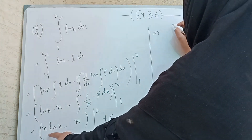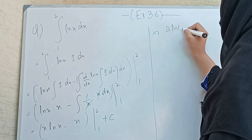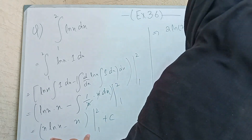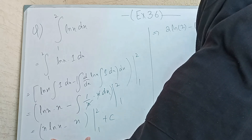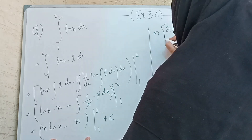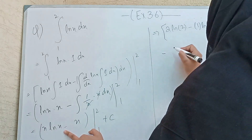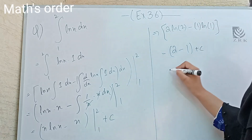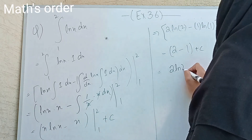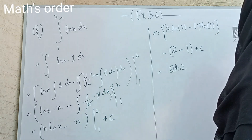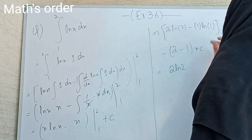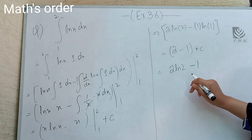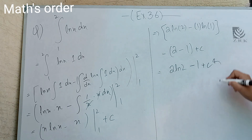Applying the limits: [2·ln(2) − 2] − [1·ln(1) − 1]. Since ln(1) = 0, this becomes 2·ln(2) − 2 − 0 + 1 = 2·ln(2) − 1. So the required solution is 2·ln(2) − 1.